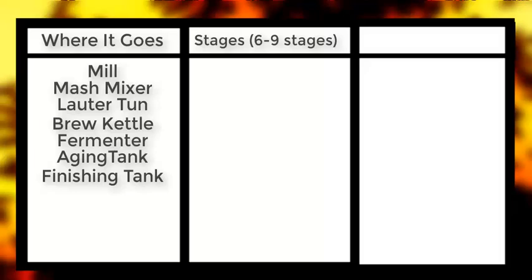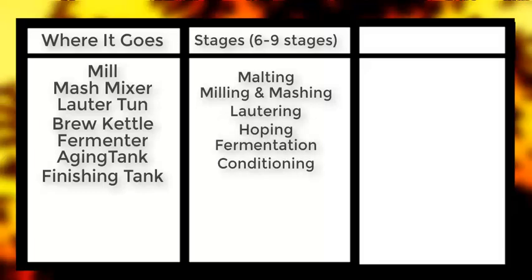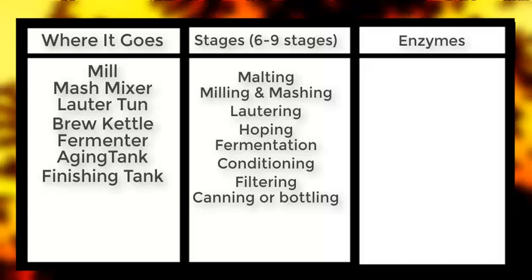The process steps go through: malting, milling and mashing, watering, hopping, fermentation, conditioning, filtering, and canning or bottling. With this we already have two of the three columns, and the last column will be the enzymes that are used or can be used in this process.